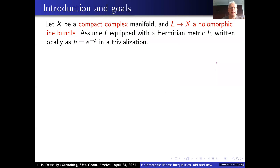Let me first give the general definitions and goals. You take X to be a compact complex manifold, and L over X a holomorphic line bundle. You assume it's equipped with a Hermitian metric H, which I write locally in a trivialization as exponential minus phi, where phi is usually a smooth function, but it might also have singularities in some cases.